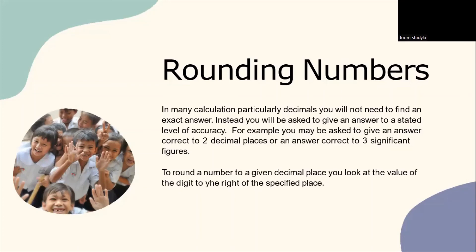For example, you may be asked to give an answer correct to two decimal places or an answer correct to three significant figures. So, to round a number to a given decimal place, you look at the value of the digit to the right of the specified place.